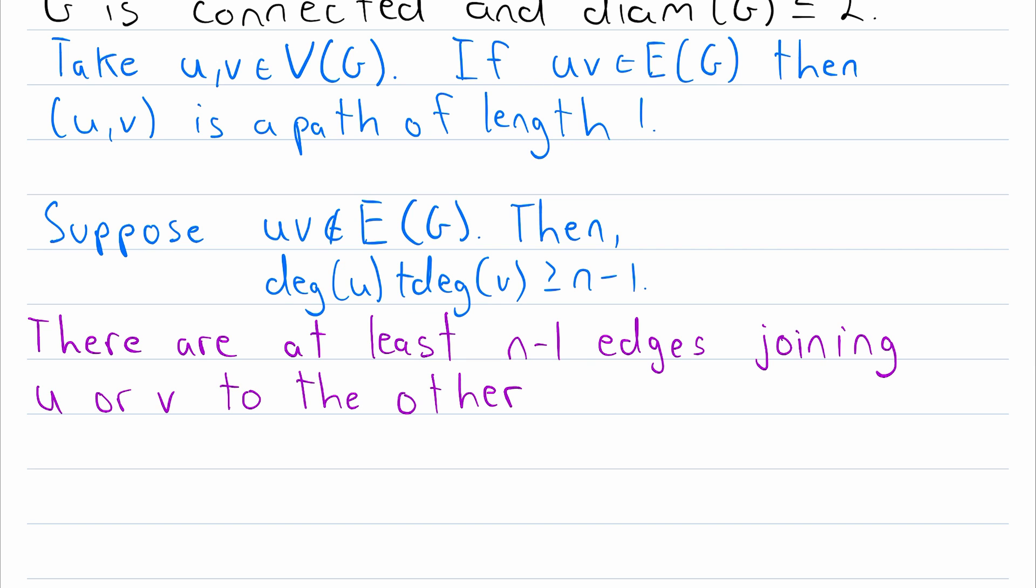But how many vertices are there besides U and V? Well, there are n vertices total, subtract U and V from that count, that's n minus 2. So there are at least n minus 1 edges joining U or V to the other n minus 2 vertices.